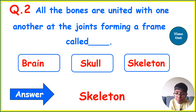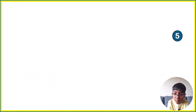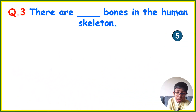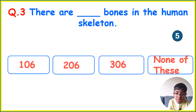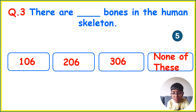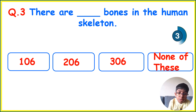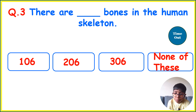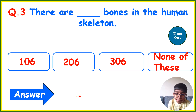Your next question is: There are dash bones in the human skeleton. Options: 106, 206, 306, or None of these. Your time starts now. Your correct answer is 206.